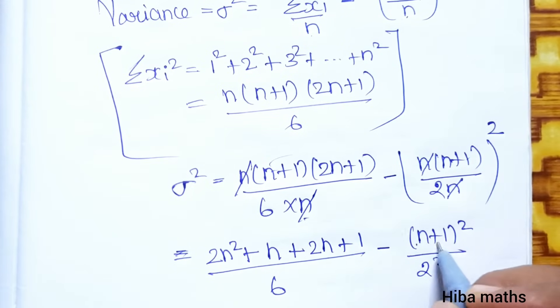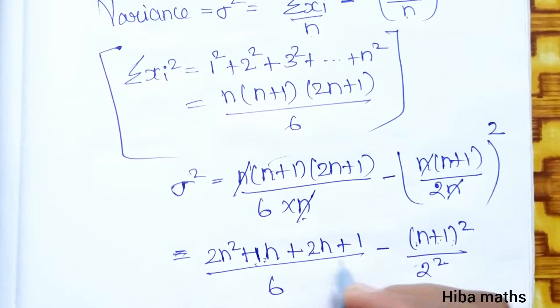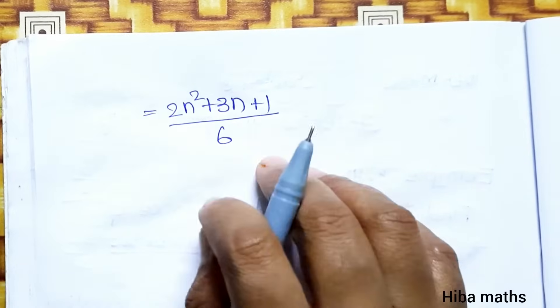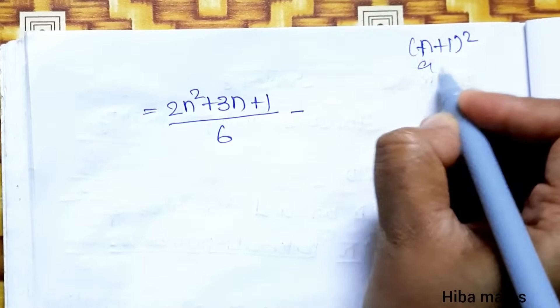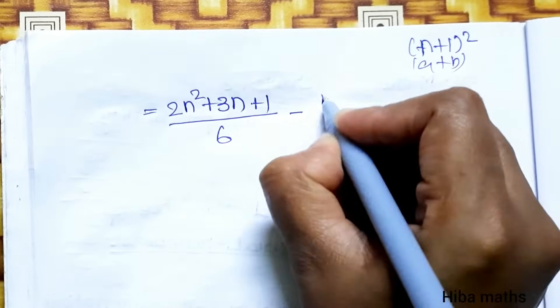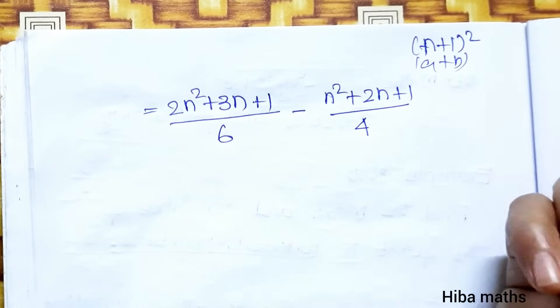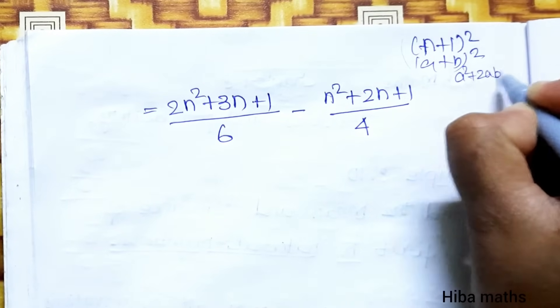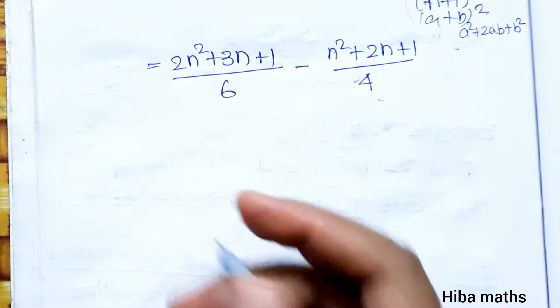What is a plus b whole square? Divided by 2 square, 4, a plus b whole square you can find. 1 plus 2, this is 3n. 2n square plus 3n plus 1 divided by 6, minus n plus 1 whole square. This is a, this is b, then a square plus 2 into a into b plus b square divided by 4. And the formula: compare a square plus 2ab plus b square.